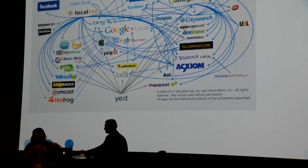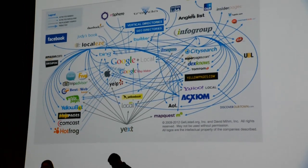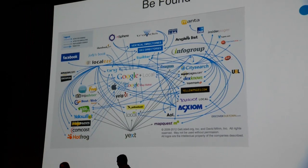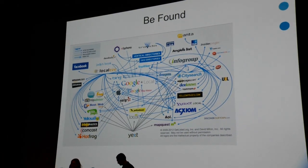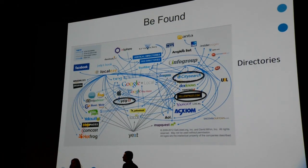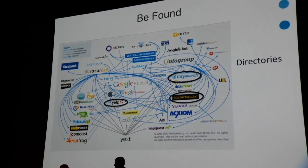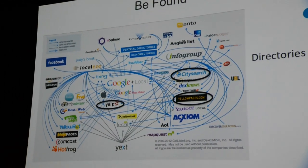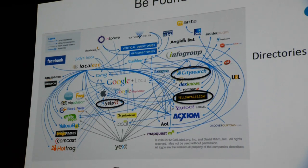So starting with 'be found' — we have this big screen behind me that looks all crazy. This is the directory landscape, the social landscape, and the search landscape. They're all interwoven and it's important that you're in many of these areas. Directories include examples like YP and City Search — you want to be there. There are 300 of them. Do you have to be in all 300? You don't, but you need to pick a significant amount of them and be really, really consistent.